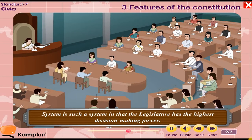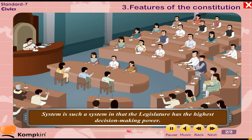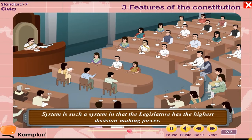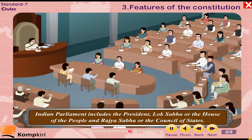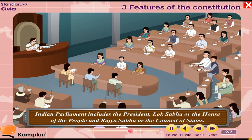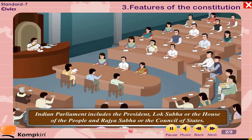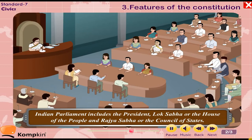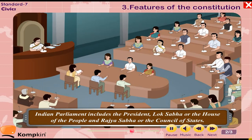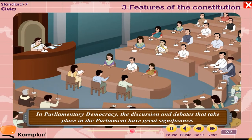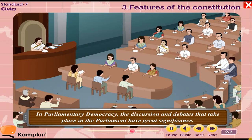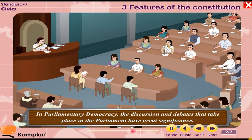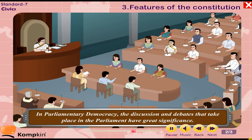Parliamentary system of government: This is a system in which the legislature has the highest decision-making power. The Indian parliament includes the President, Lok Sabha or the House of People, and Rajya Sabha or the Council of States. In parliamentary democracy, the discussions and debates that take place in the parliament have great significance.